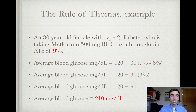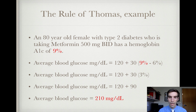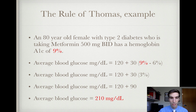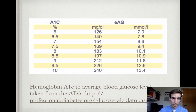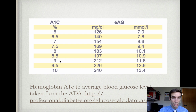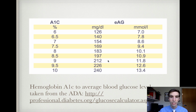An 80-year-old female with type 2 diabetes taking metformin 500 milligrams twice a day has a hemoglobin A1c of 9%. Using the formula: 9 minus 6 is 3, times 30 is 90, plus 120 is 210. So her average blood glucose using the Rule of Thomas is 210 milligrams per deciliter. Comparing that to the American Diabetes Association chart, a hemoglobin A1c of 9% correlates to an estimated average glucose of 212 — using the Rule of Thomas we found 210.